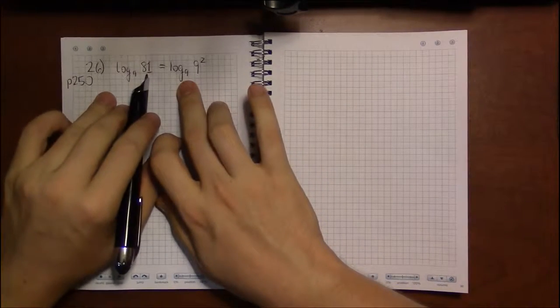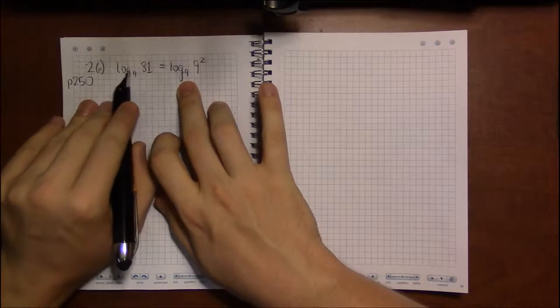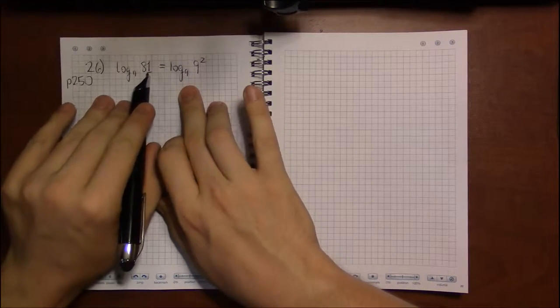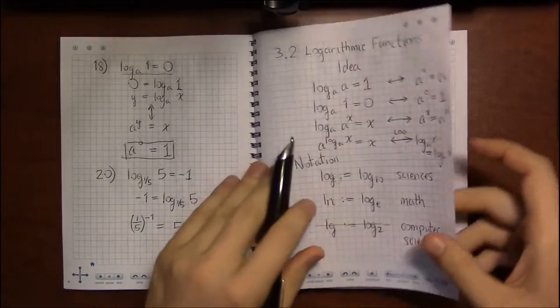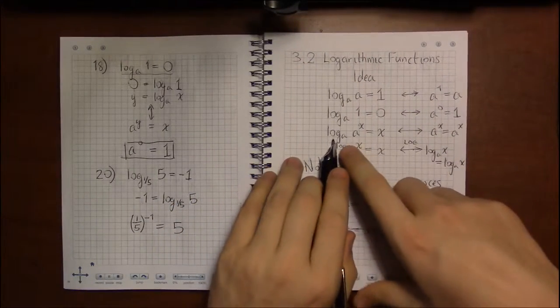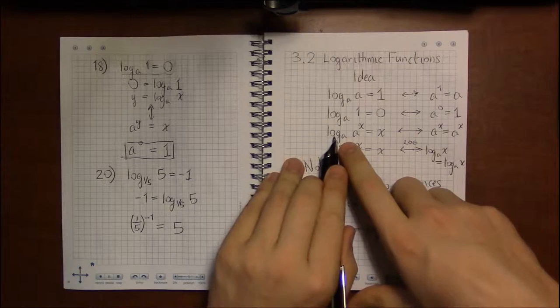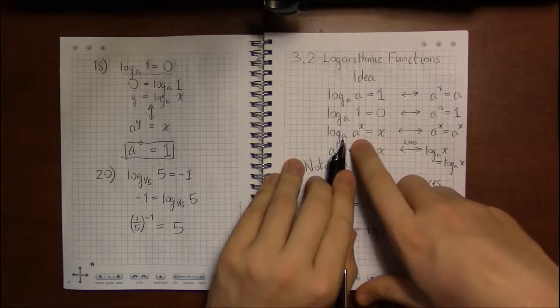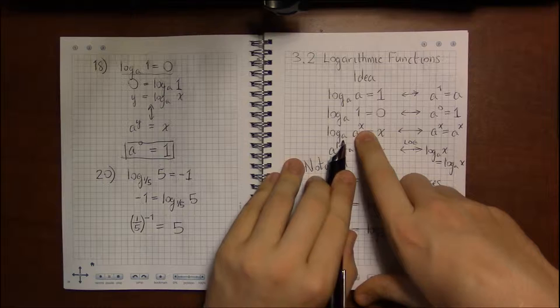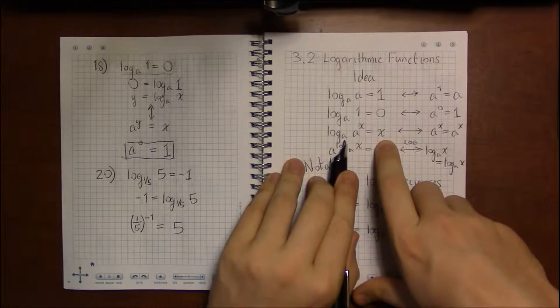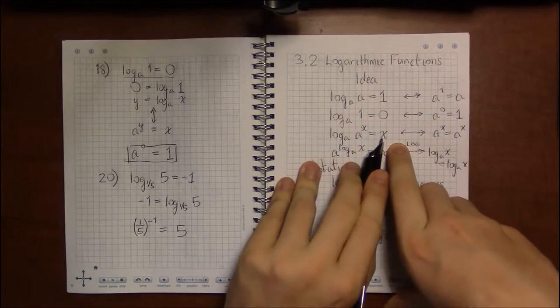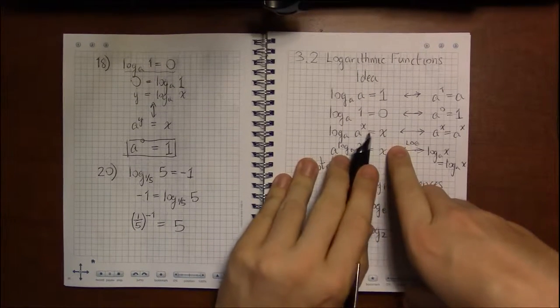And what we want to do is we want to utilize those rather silly log properties to get our answer. So if I rewrite 81 as 9 to some power, 81 is 9 squared. Then what I get to do, I'm looking at log base 9 of 9 squared. This property tells me that the right-hand side has to be equals 2, equals the power of 9.